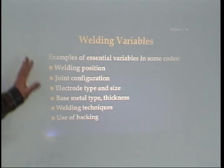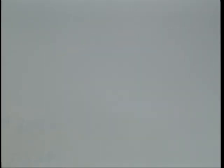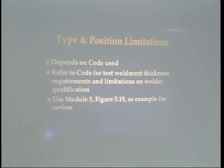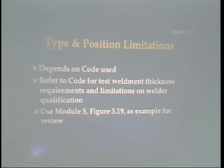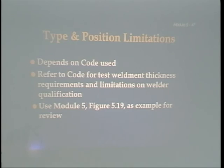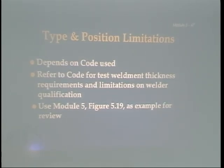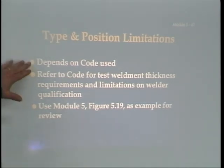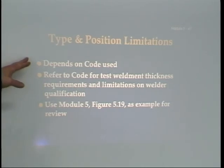Codes are generally specific as to the limitations of these variables. Figure 5.19 lists position limitations on certain weld types for welder qualification. Type and position limitations depend on the code being used. Always refer to the code for test weldment thickness requirements and limitation on welder qualification.